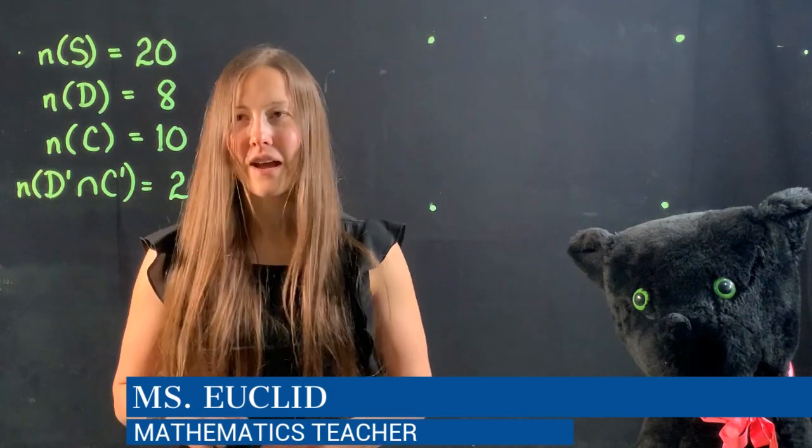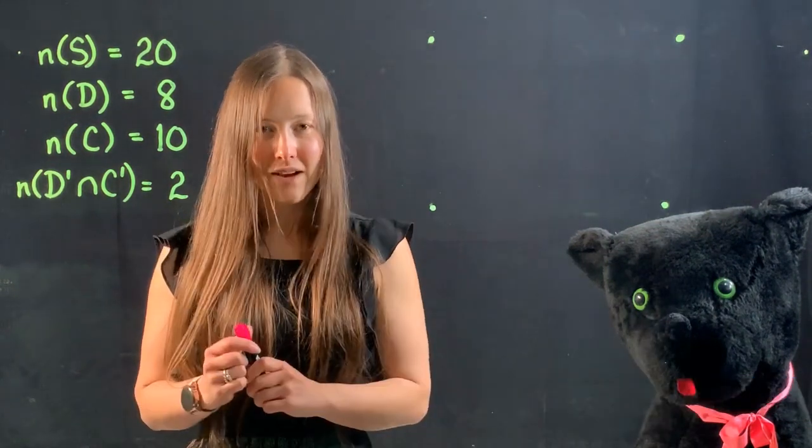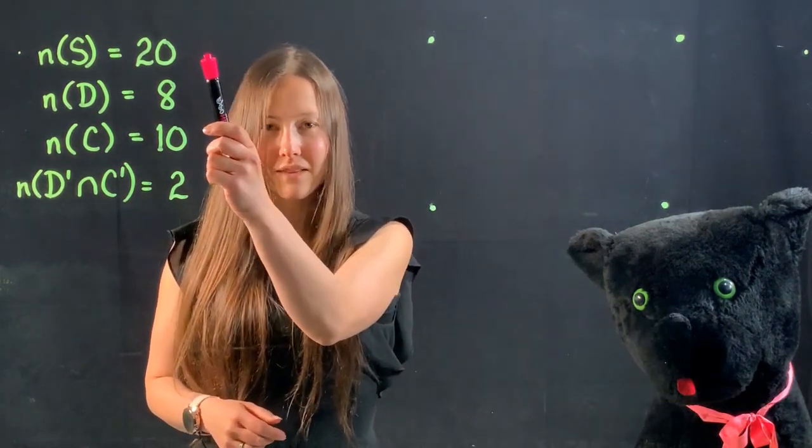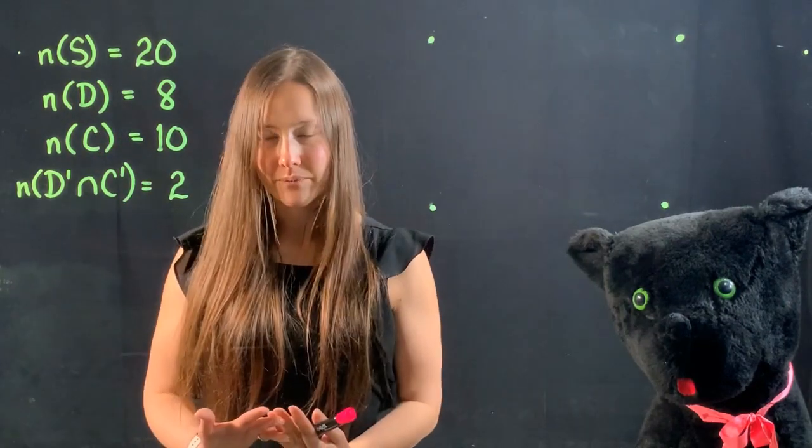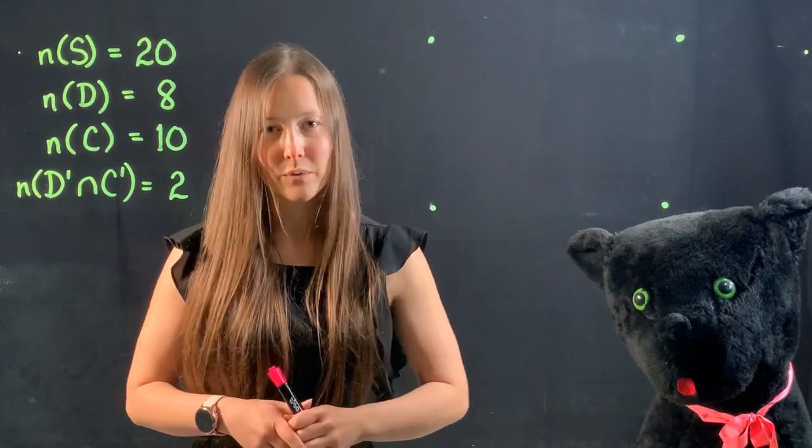As you can see here, we have our data summarized on the side. The first item is saying that the number of people that were surveyed on pet ownership was 20. So that's the total number of people who were surveyed.